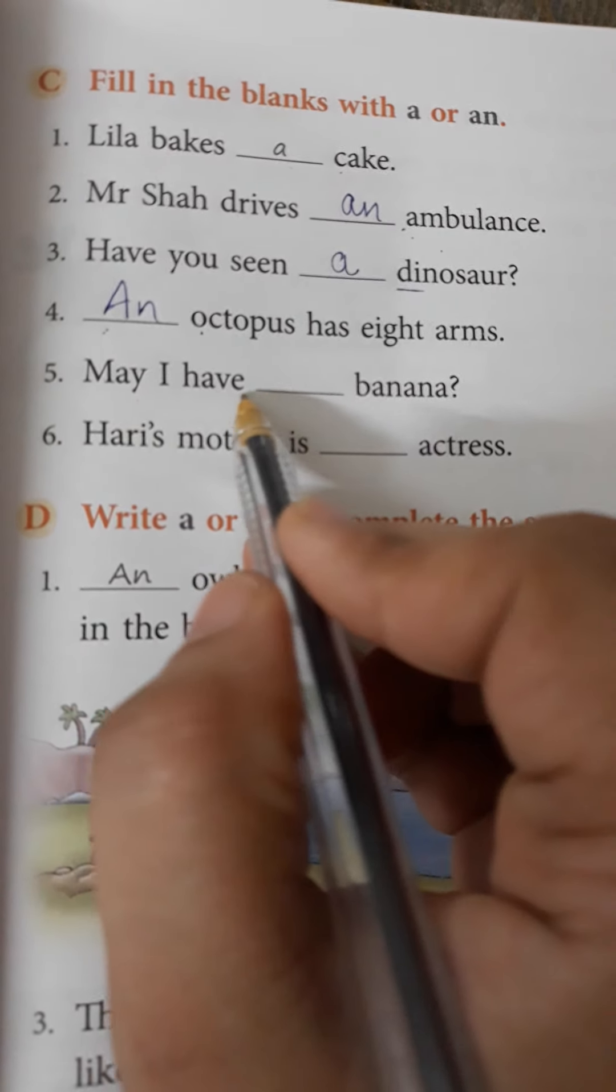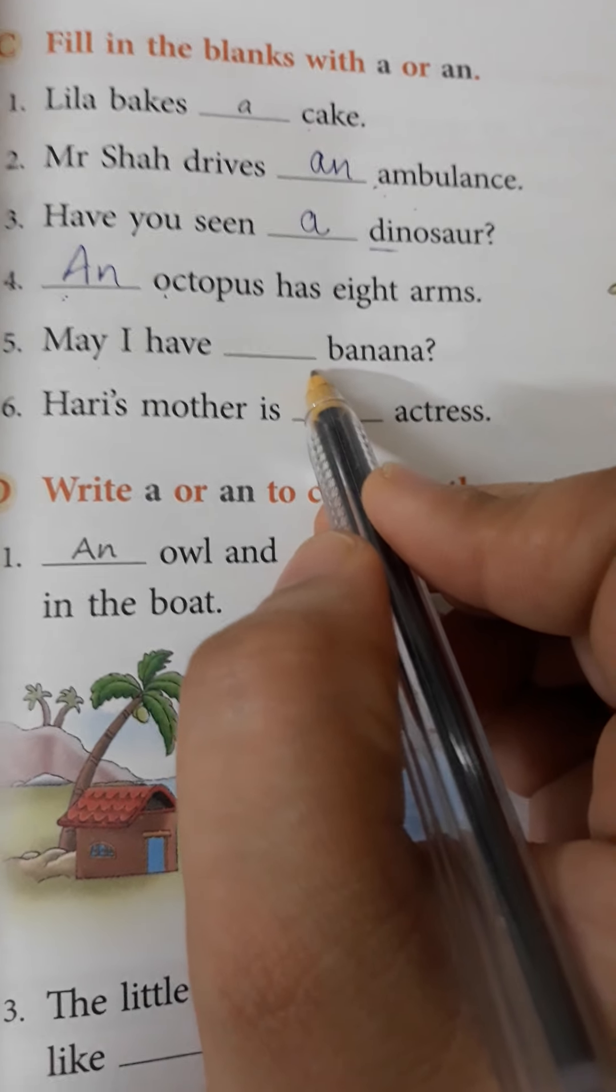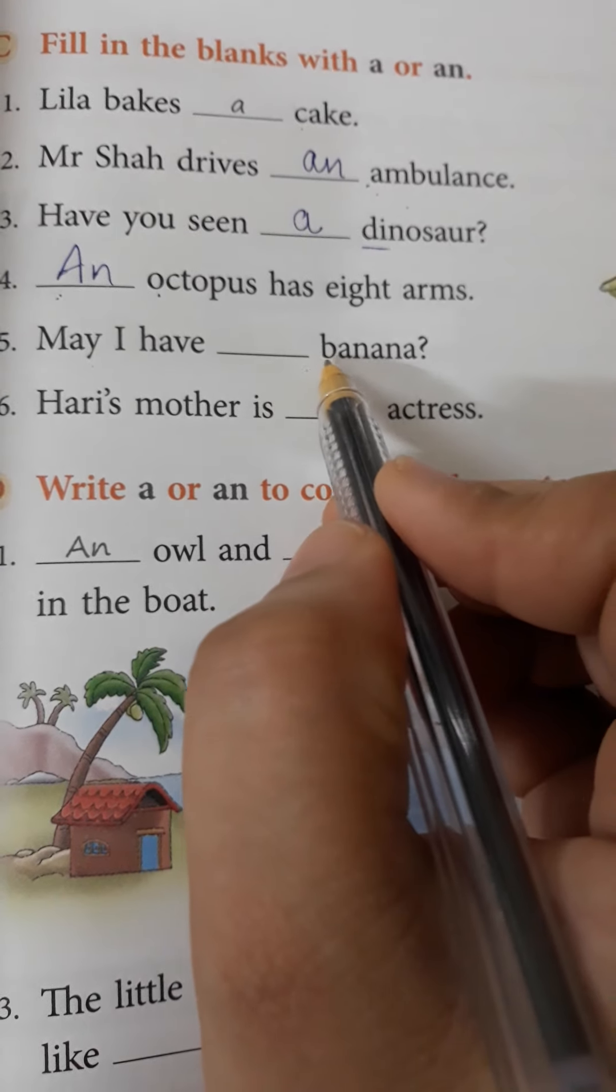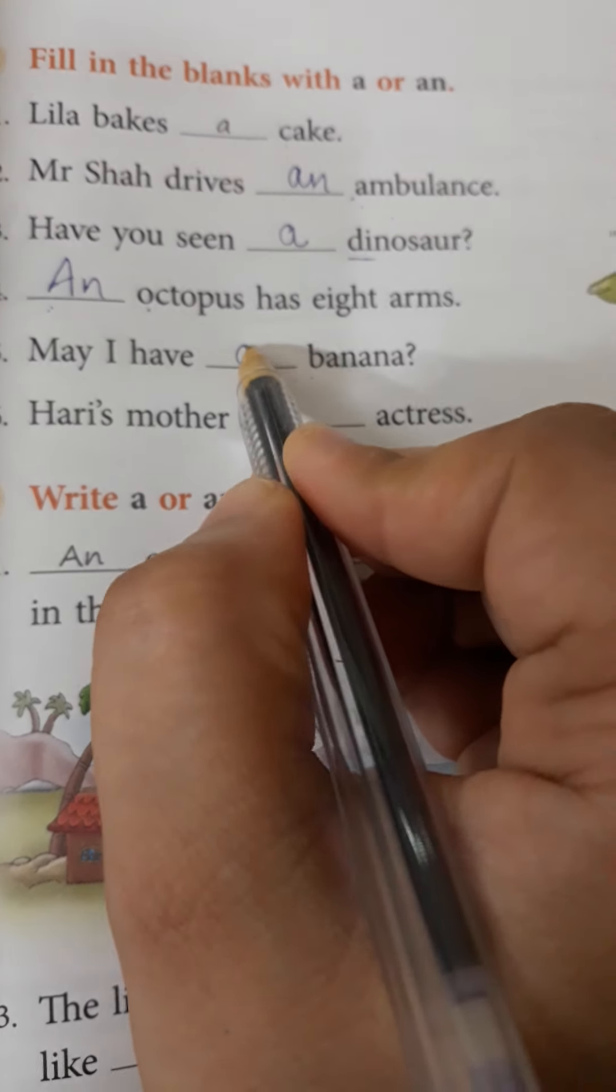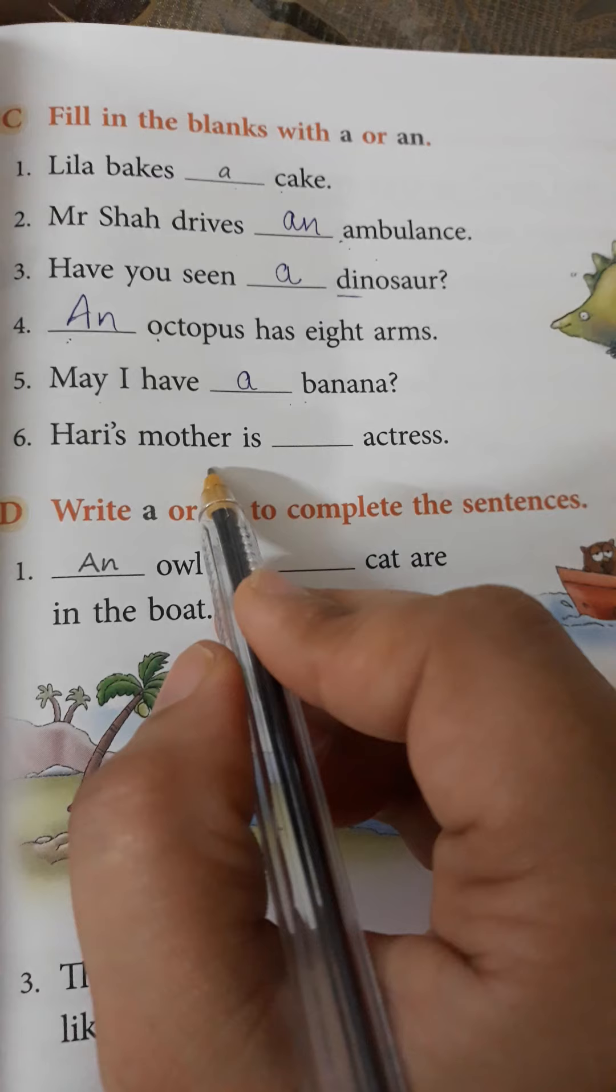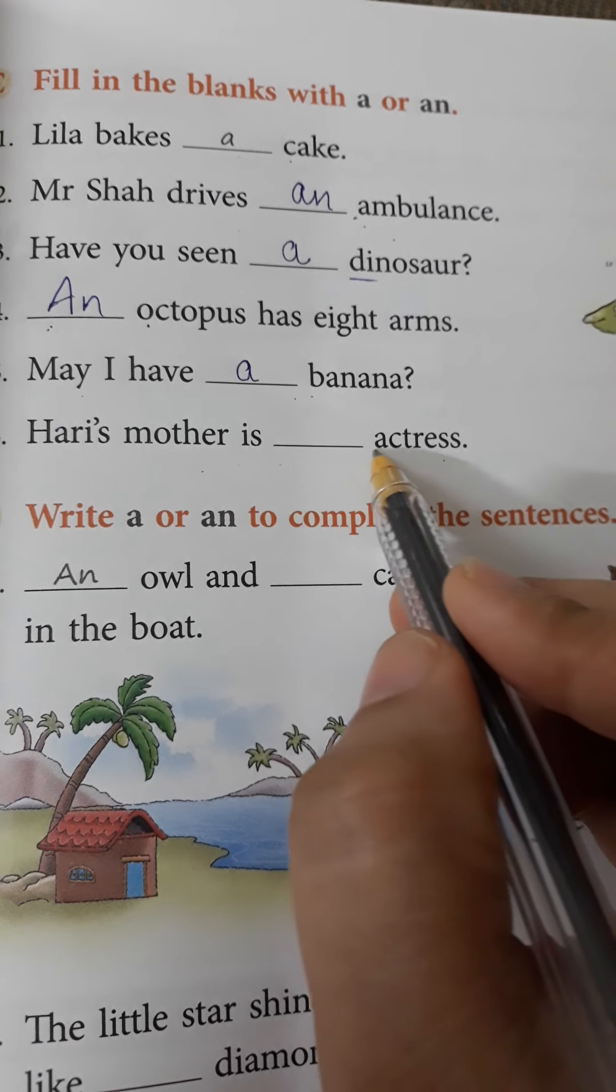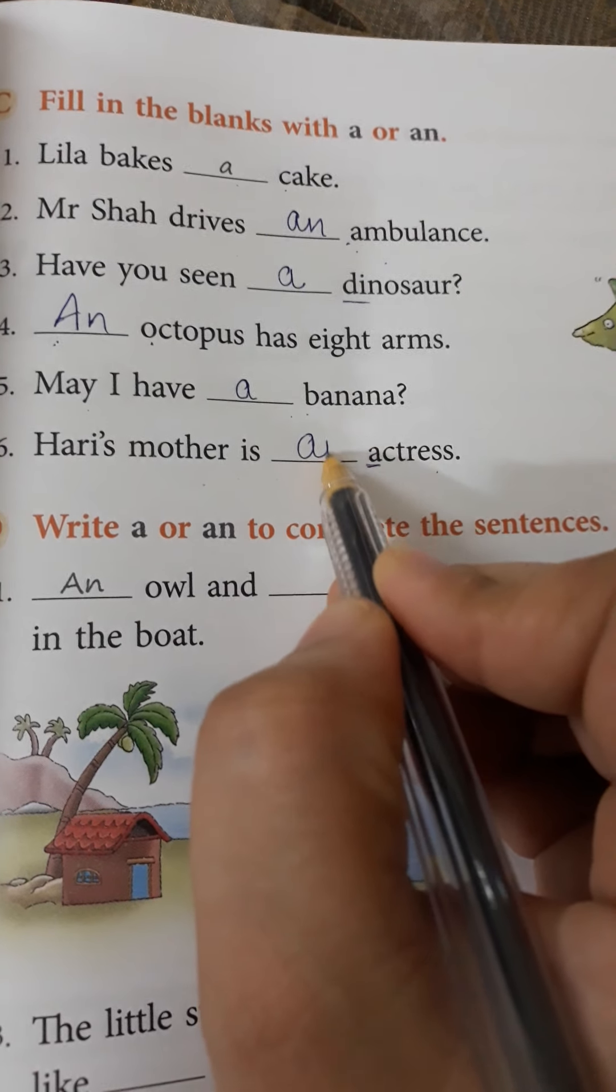May I have AN banana? AN banana or A banana? B is consonant. So, A banana. Hari's mother is dash actress. A is again a vowel. So, it's going to be AN actress. Right.